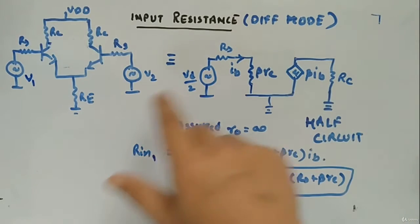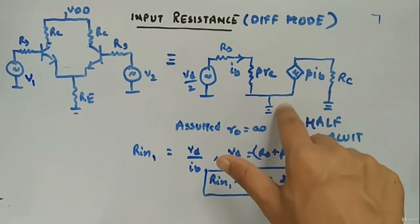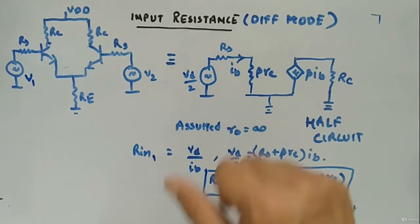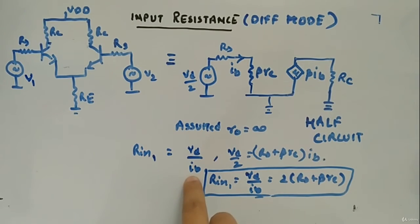If you remember, the drop across this will be 0 in differential mode. That's the reason Re is not there here. Now what will happen, you will apply KVL at this loop. We are interested in Vd by Ib, differential input resistance, Rin1.